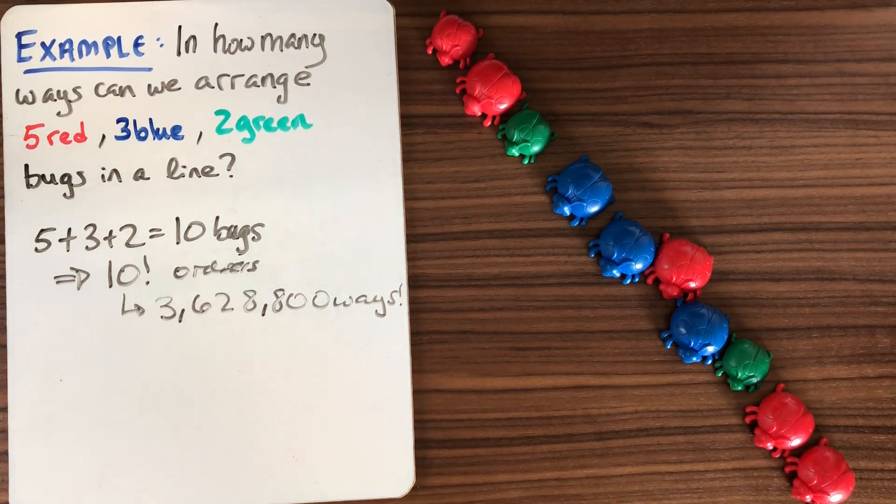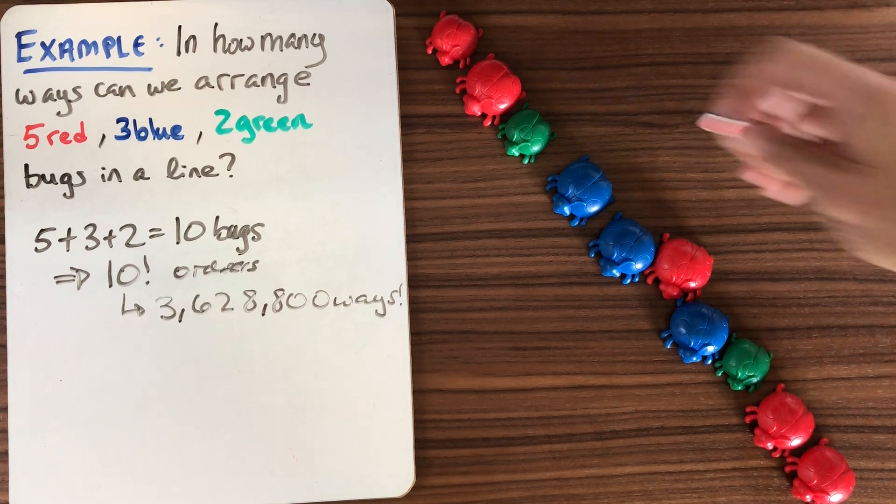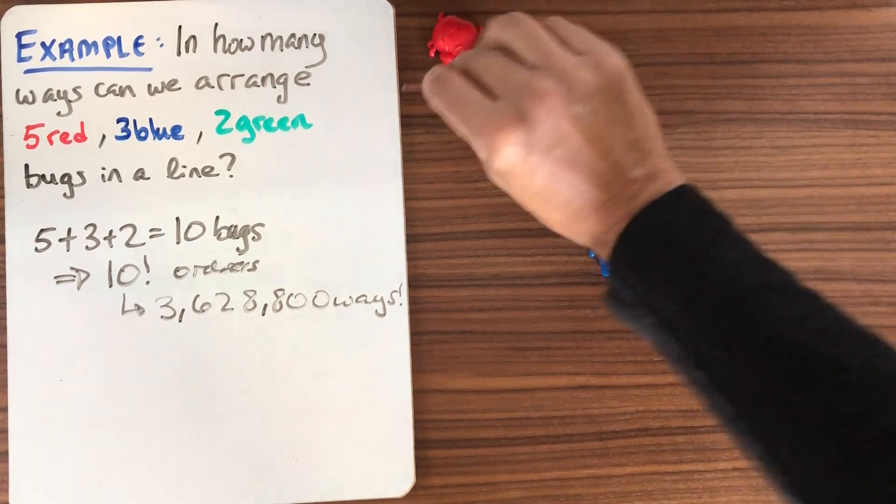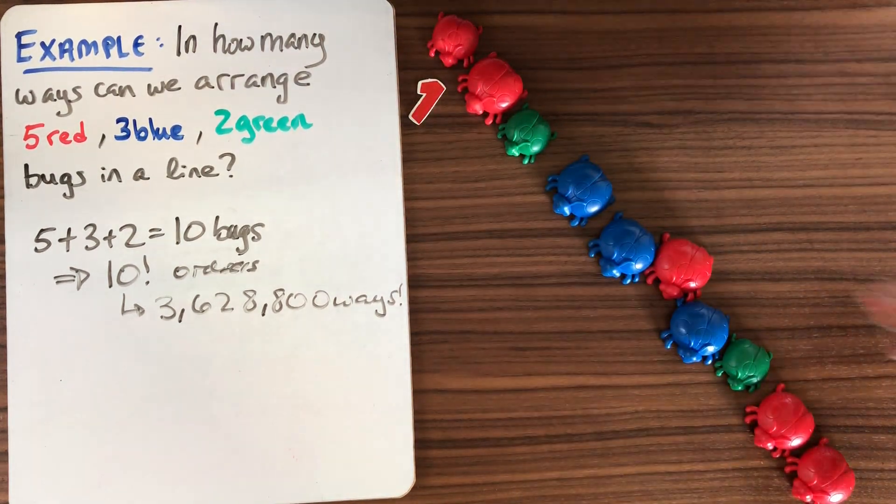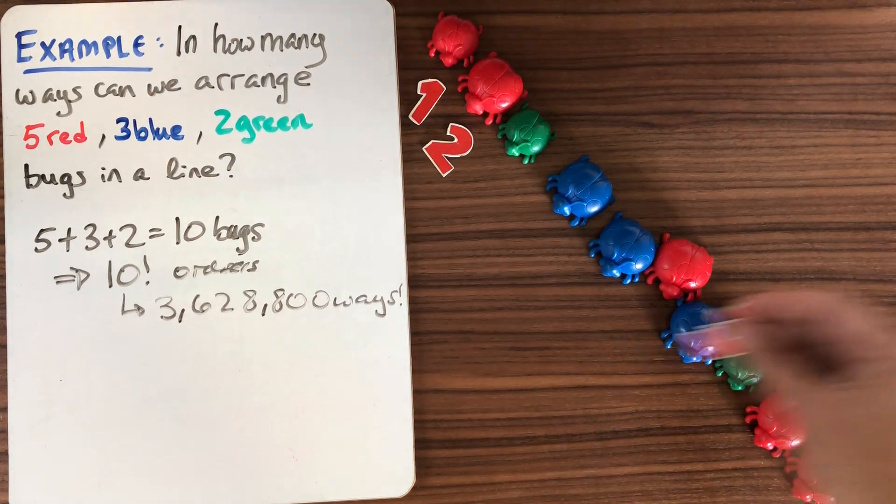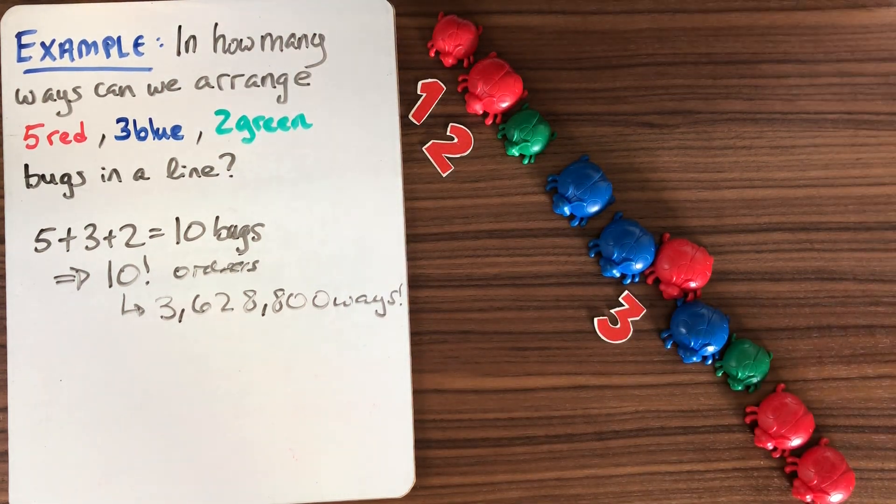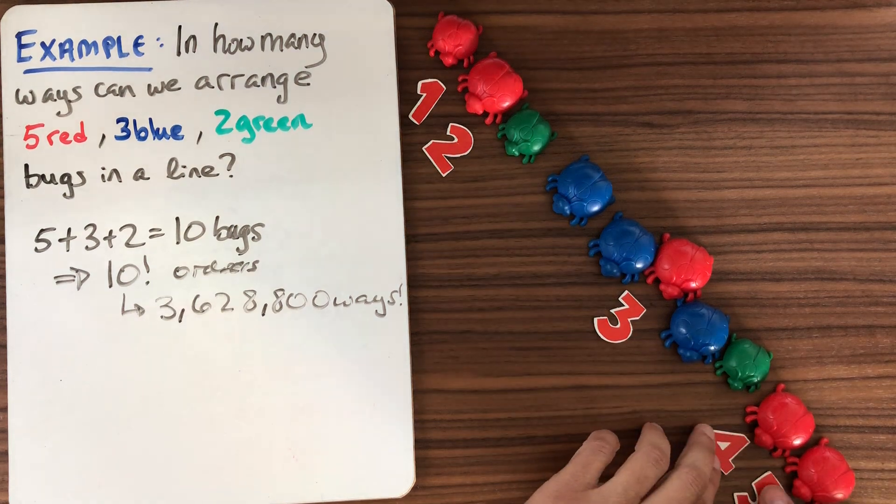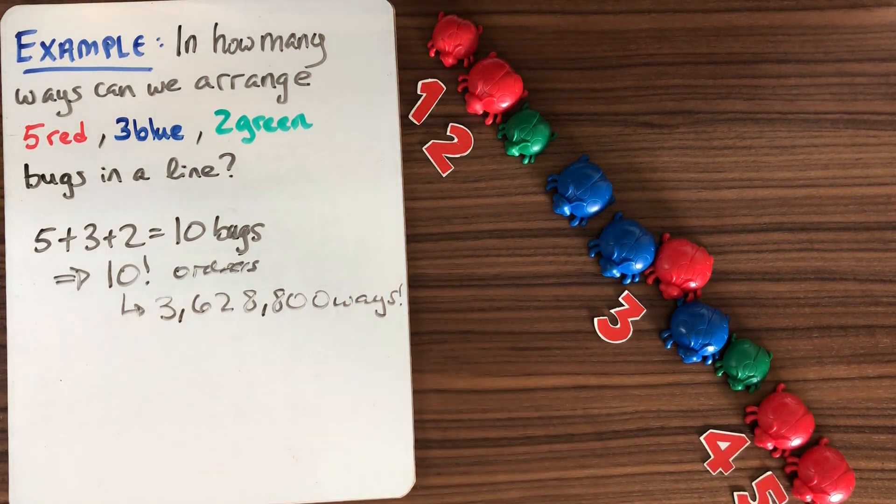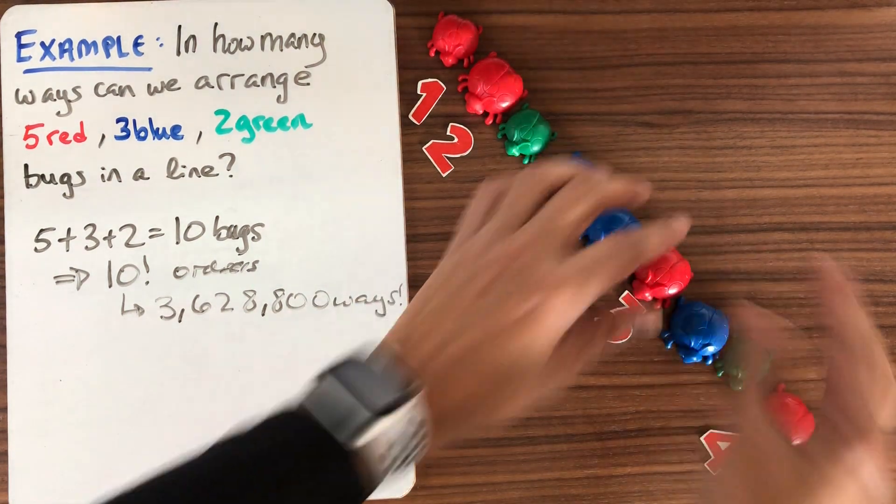So I can think about what I could do is I could approximate what we have and sort of number my bugs. So there's bug 1, there's bug 2, here's bug 3. I'm just numbering the red bugs for right now. Here's bug 4 and here's bug 5. So if I just think about numbering the red bugs and I think about mapping those guys to numbers...